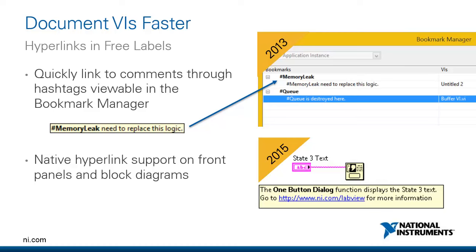One thing added in LabVIEW 2015 to make documentation more efficient is native HTTP hyperlink support. If you type HTTP colon slash slash, that comment in a free label on the front panel or block diagram will automatically turn blue and underlined. You can then type whatever link you want it to point to — like a PDF hosted on a website, or an HTML spec you've written.